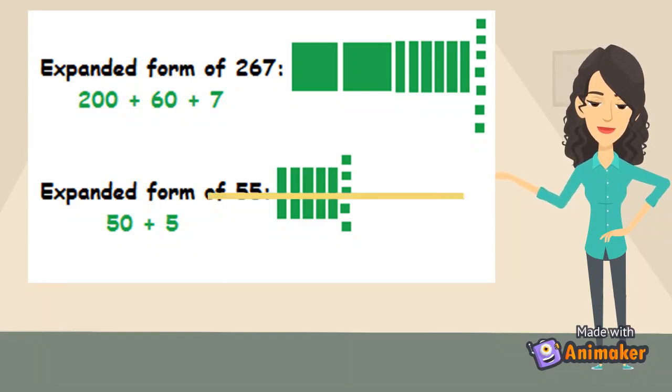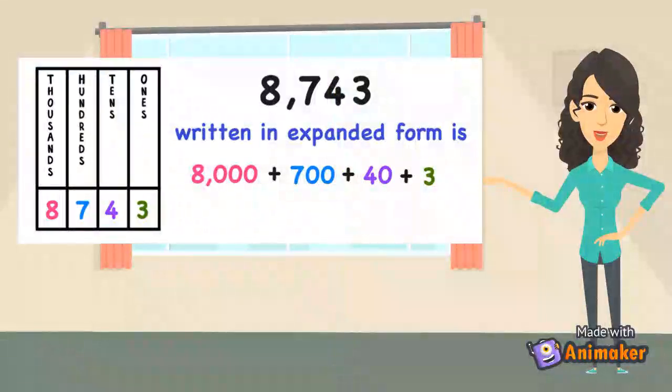The expanded form is 8000 plus 700 plus 40 plus 3.